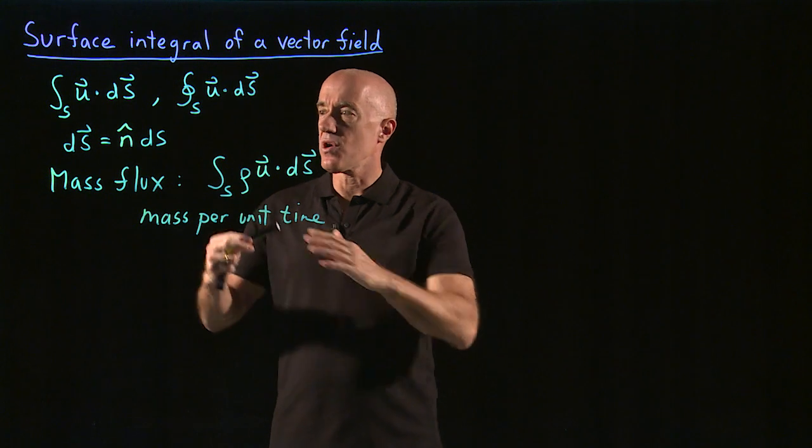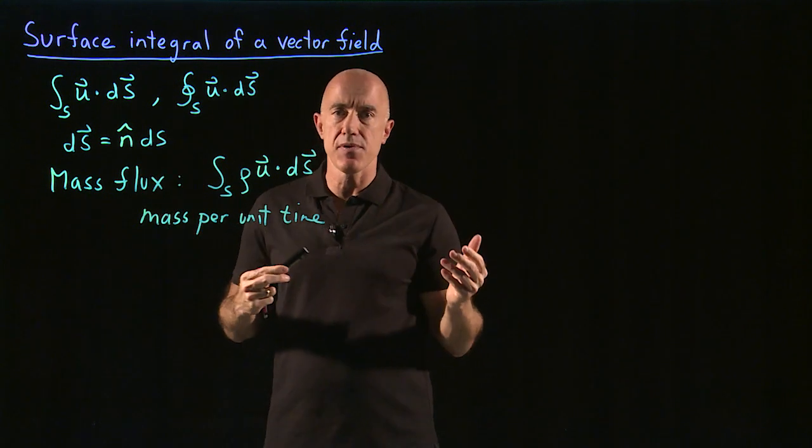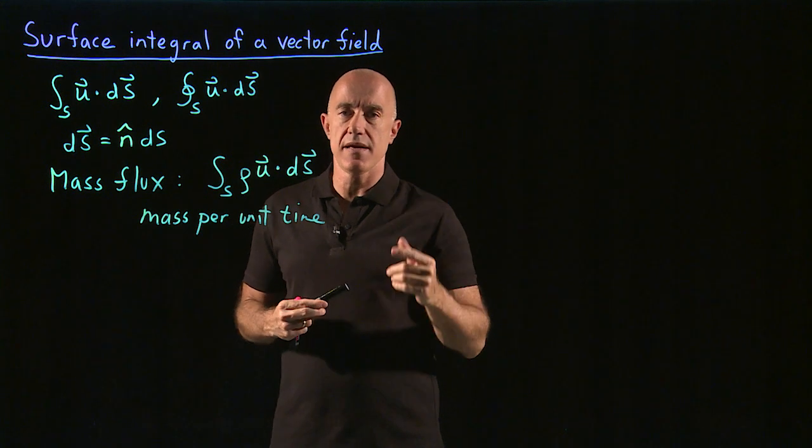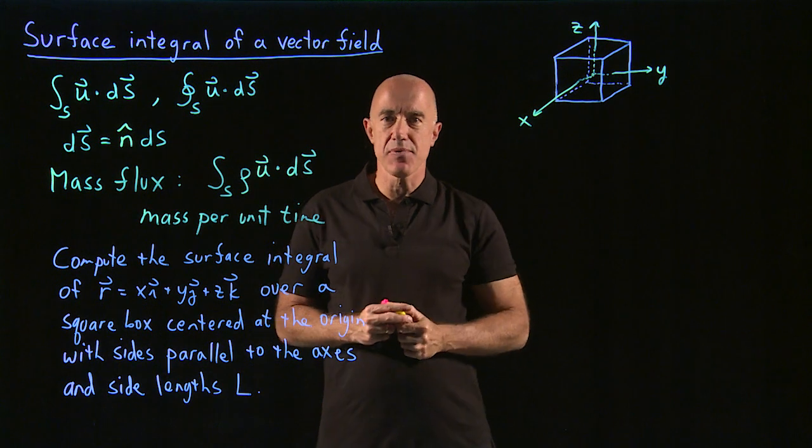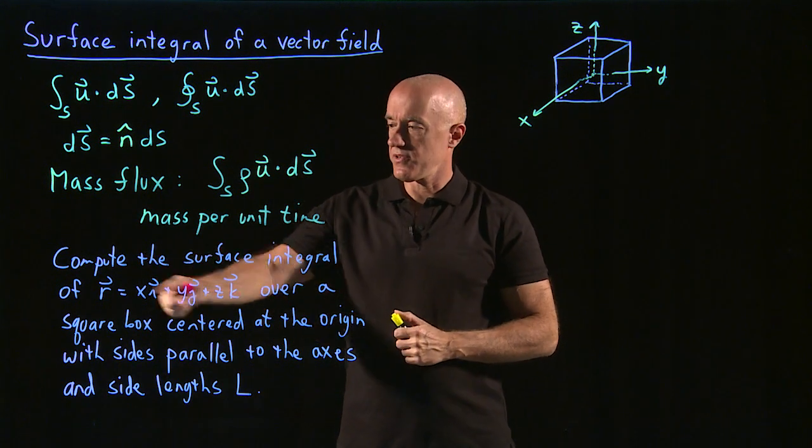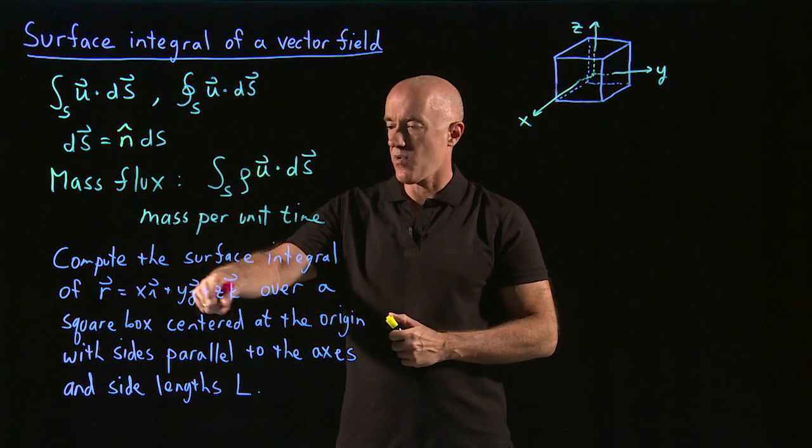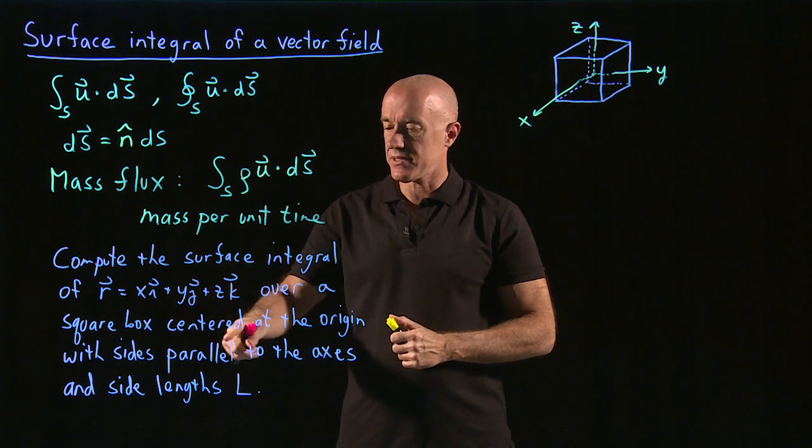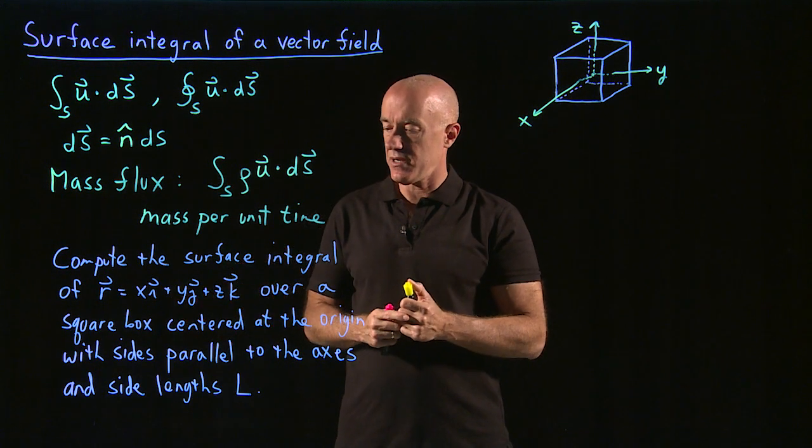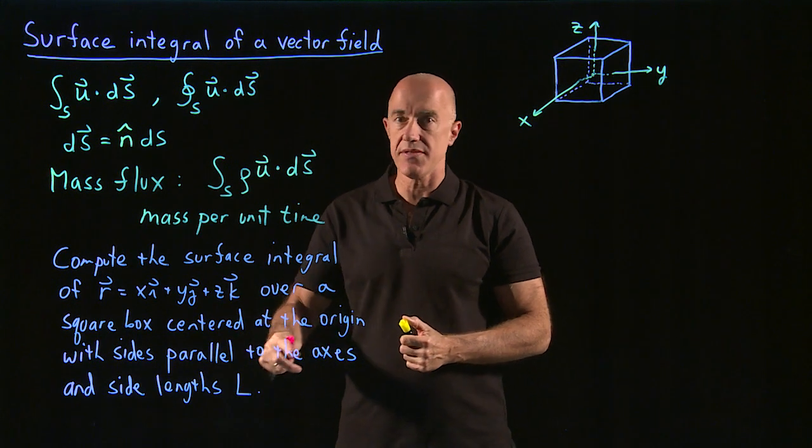So in order to put this in an example, let's work a specific case. So here's the example I want to do. Compute the surface integral of the position vector r, xi plus yj plus zk, over a square box centered at the origin, with sides parallel to the axes and side lengths L.